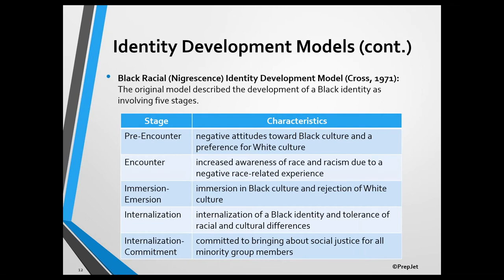Cross's Black Racial Identity Development Model has been revised several times. The original model was known as the Negrescence Model and distinguishes between five stages. People in the pre-encounter stage idealize and prefer white culture and have negative attitudes towards their own black culture, viewing it as an obstacle and source of stigma. As a result of exposure to events that cause them to become aware of the effects of racism, people in the encounter stage question their views of white and black cultures and are interested in learning about and becoming connected to their own culture.